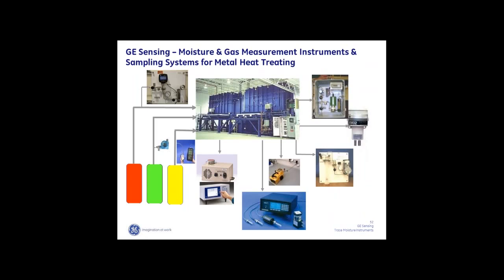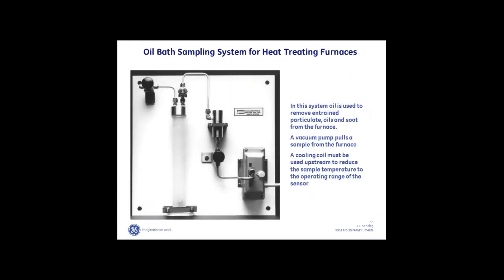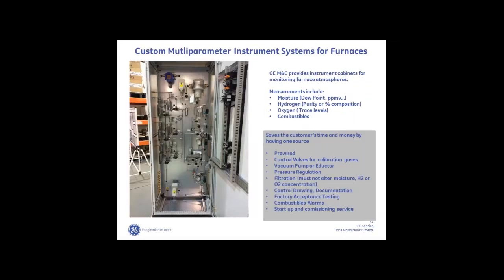In metal heat treating, you're creating atmospheres to impart certain properties into the metal — we measure both the feed gases going into the furnace and the furnace atmospheres themselves. Those atmospheres are dirty environments with a lot of metallic particulates and sometimes acid gases, so a very elaborate sampling system is required. One of the most effective is an oil bath where we literally bubble the sample through a container of oil — 5W30 motor oil. Just like motor oil in a car, it traps particulate material and becomes darker over time; eventually you change the oil. Here's a panel of that system with a moisture, oxygen, and hydrogen monitor all in one turnkey sampling system.